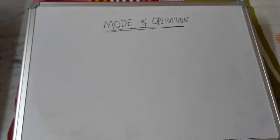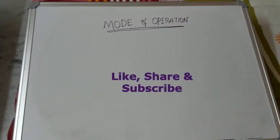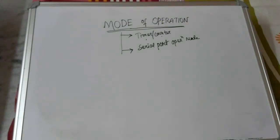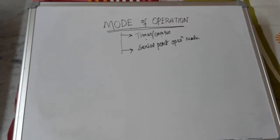The operating modes of the 8051 microcontroller can be divided into two parts. When the timer and counter act as a register, the operation depends upon the mode — that is called the timer/counter mode. When data is sent from the microcontroller to another peripheral device or received between two transceivers via serial communication, the port acts as the serial interface — that is called the serial port mode.